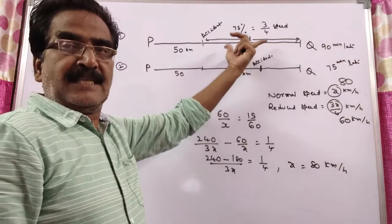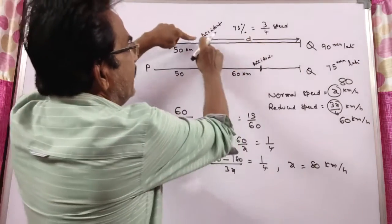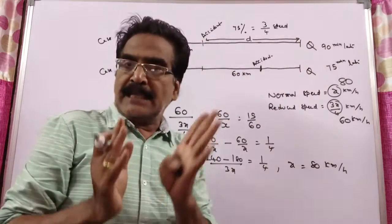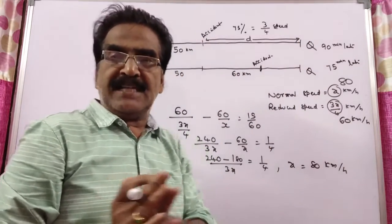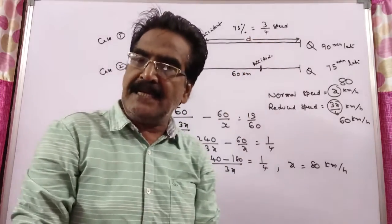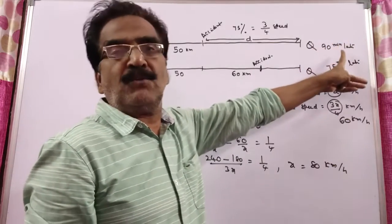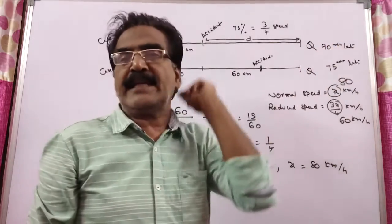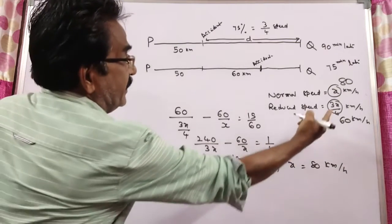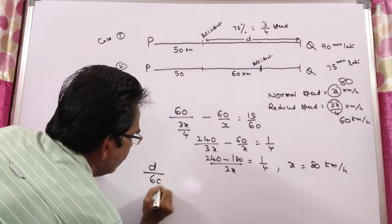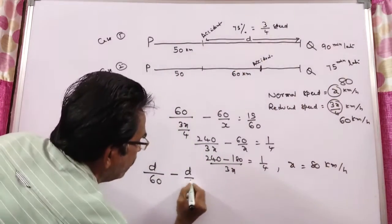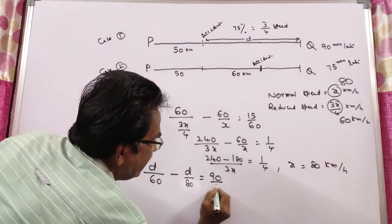Now let us consider the first case. Say the remaining distance after the accident is D kilometers. The time difference to travel D kilometers with the original speed versus the reduced speed equals 90 minutes. So D/60 minus D/80 equals 90/60.